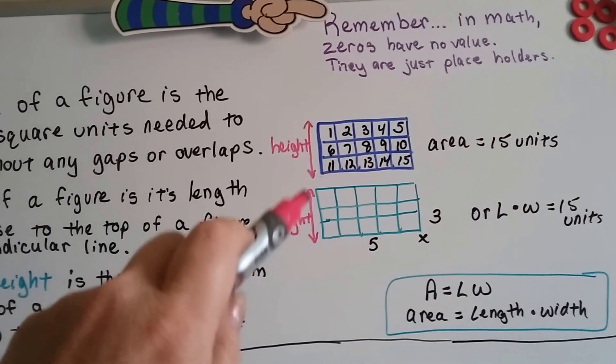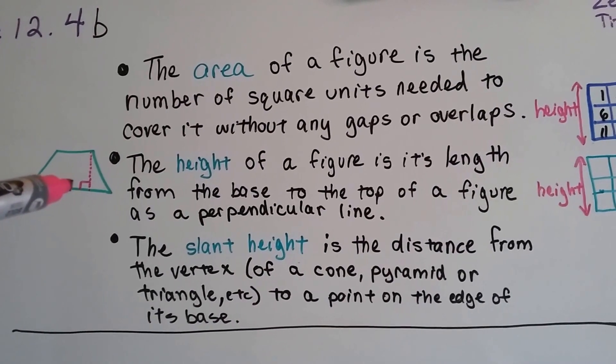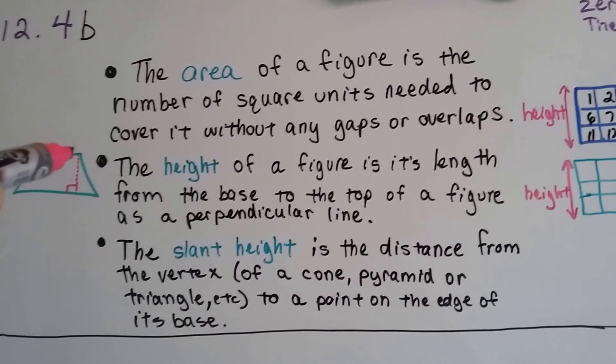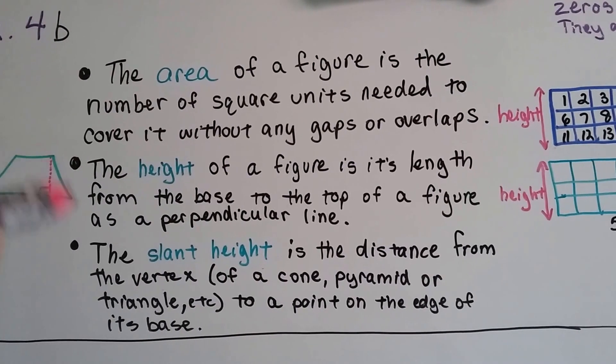So you might see the word height here that might confuse you. The height of a figure is its length from the base to the top of the figure is a perpendicular line, not this diagonal line here.